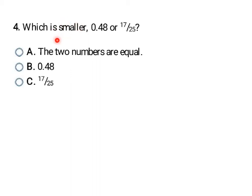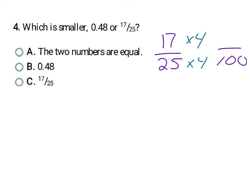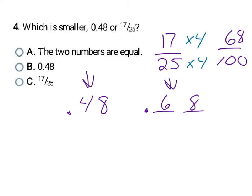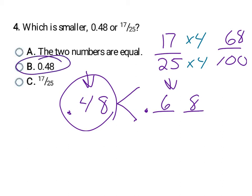This time they're asking which is smaller. I convert the fraction to a decimal: 25 times 4 is 100, so I multiply the top by 4 also — 4 times 17 is 68. Now with 100 in the denominator, my decimal equivalent goes to the hundredths place: 0.68. Comparing 0.68 to 0.48, starting from the left: 6 is bigger than 4, so 0.68 is bigger. That means 0.48 is the smaller one, and B is my final answer.